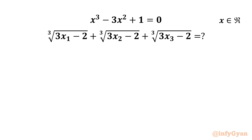Here we have one cubic equation: x³ - 3x² + 1 = 0, given that x is a real number. Then we are asked to evaluate the expression E = ∛(3x₁ - 2) + ∛(3x₂ - 2) + ∛(3x₃ - 2). Let us say the required expression is E.